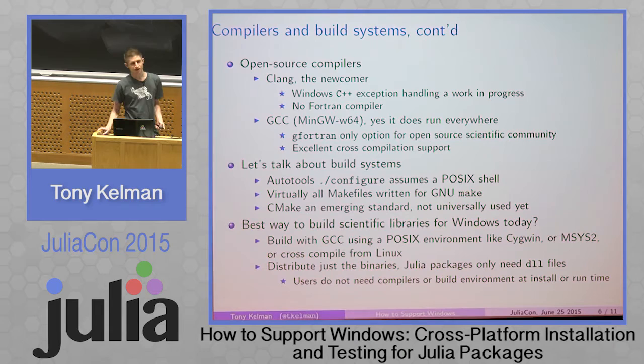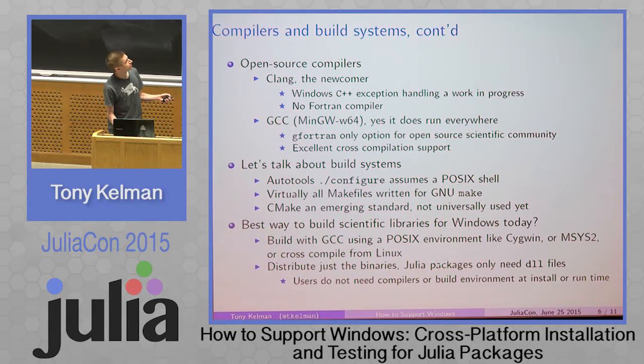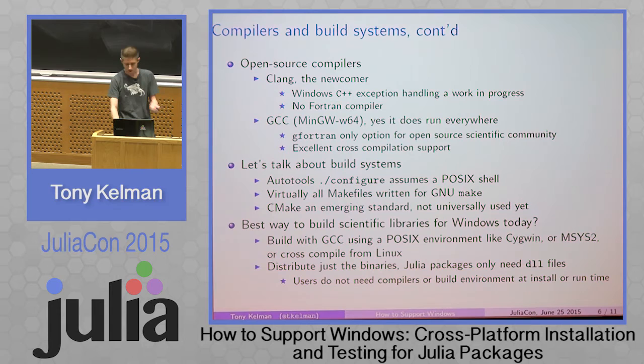Build systems: Autotools and configure assume a POSIX shell — you need to run a configure script, but how do you do that if you don't have a shell? CMake is not there yet either. So today, we build with GCC using a POSIX environment — Cygwin or MSYS2 — or cross-compile from Linux, and distribute the binaries. Julia's excellent ccall support means you only need the DLLs; we don't need to build glue code on the user's machine the way Python has struggled with for so long. We just need the library.